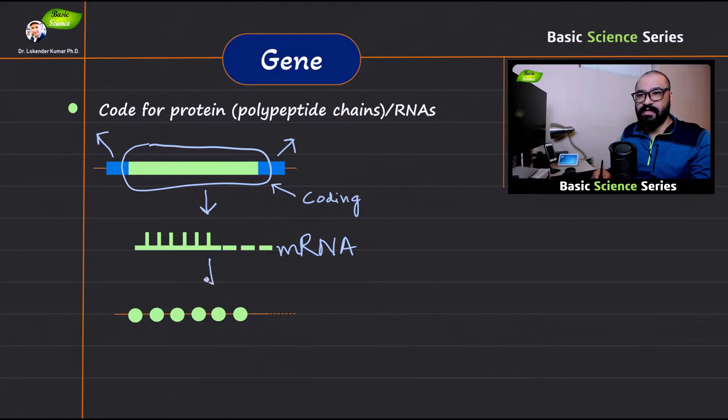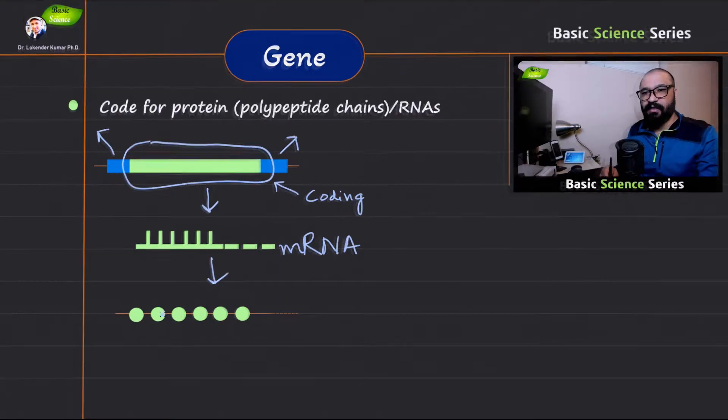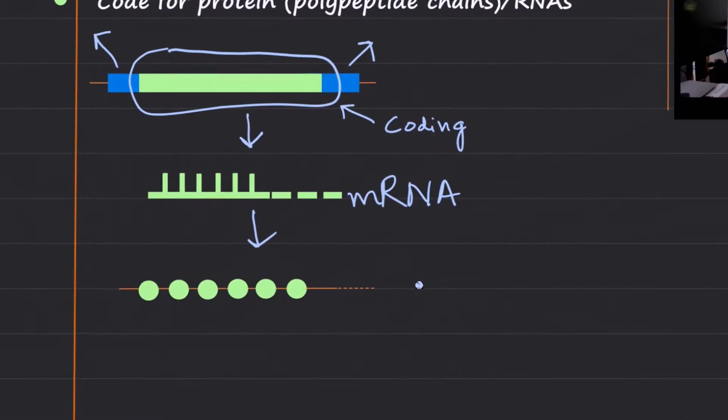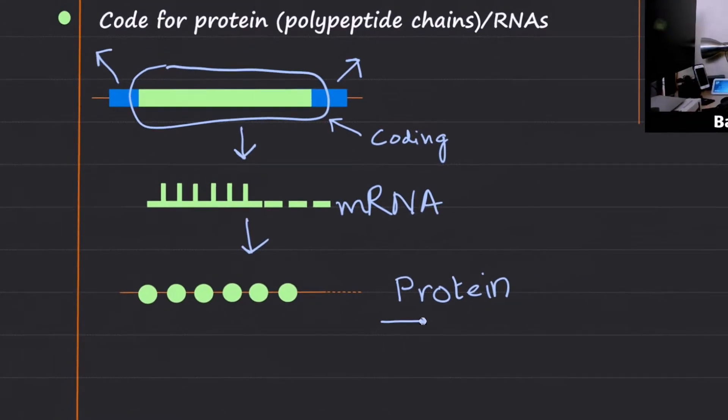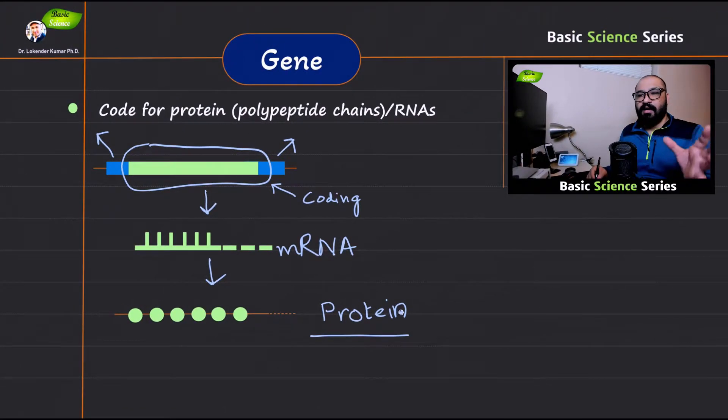Further this RNA molecule is going to construct or provide the information to construct a unique polypeptide molecule, the protein molecule. So this protein molecule is further going to perform a specific function that is going to express a particular phenotype or a trait in the progeny.